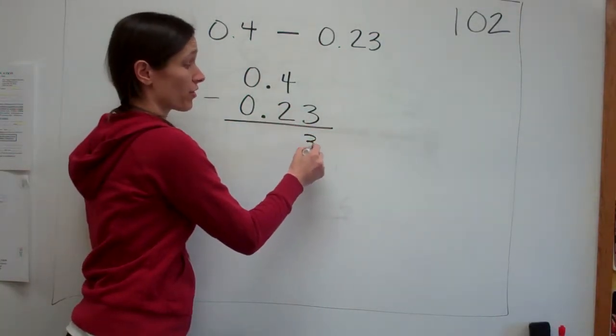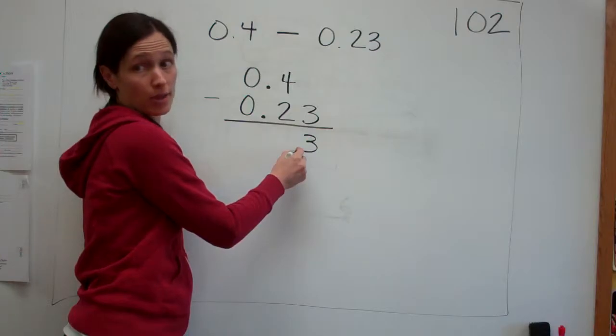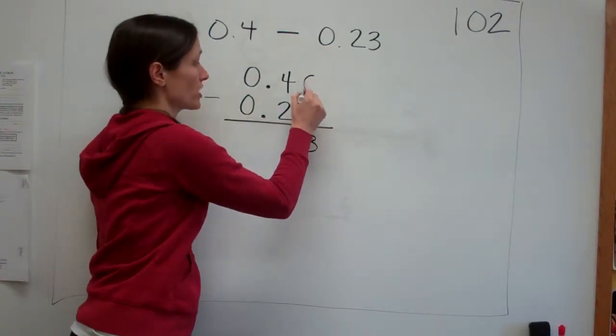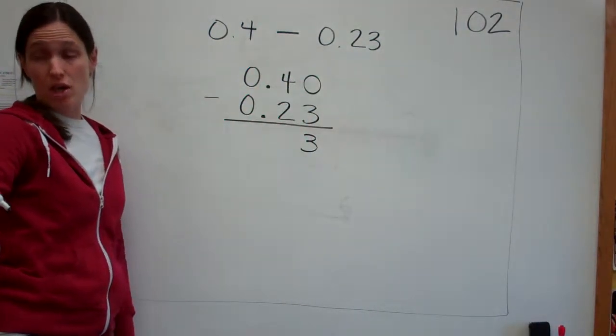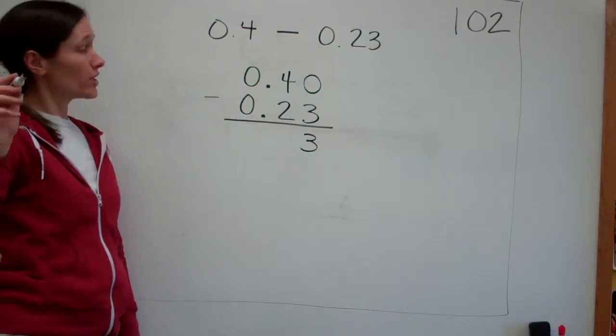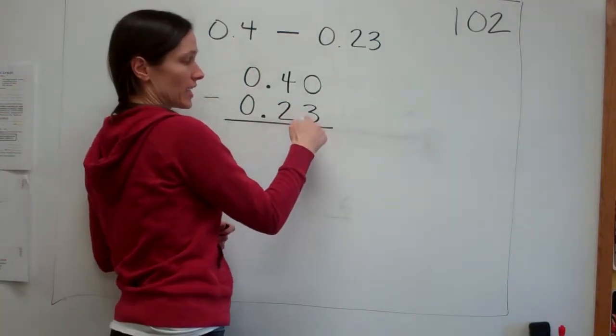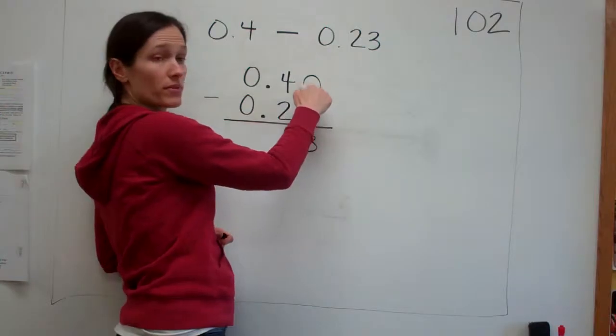If you brought down 3, I want you to see that that's not going to be the answer. Watch this. It works with adding like that, but with subtraction you have to have a zero. Watch this. Can I take 3 from 0? No.